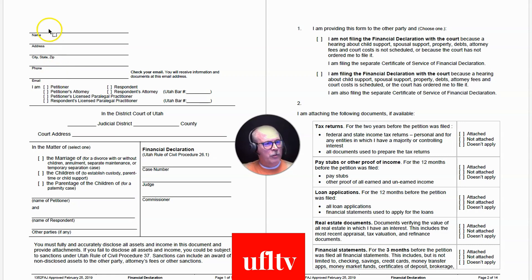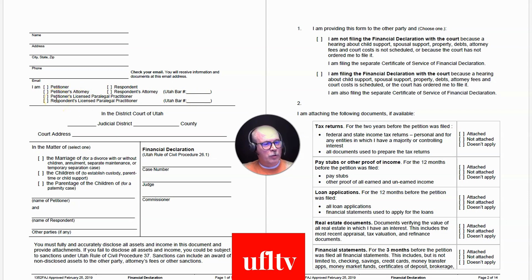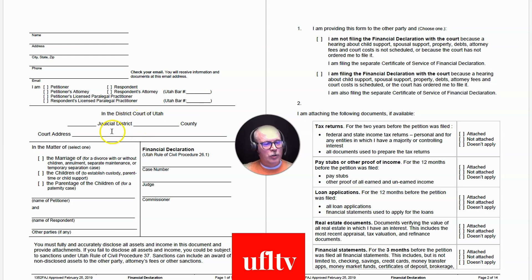If you are representing yourself, you would put your name, address, phone number, and email at the top. Under the second part, you identify which party you are. If an attorney or licensed paralegal practitioner is submitting this for you, they will identify themselves by bar number. You have to identify which number of the judicial district you're in — we have eight judicial districts — and then provide the court address, which you can get by calling the clerk or visiting the courthouse.